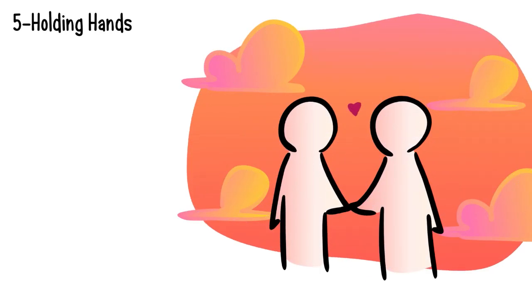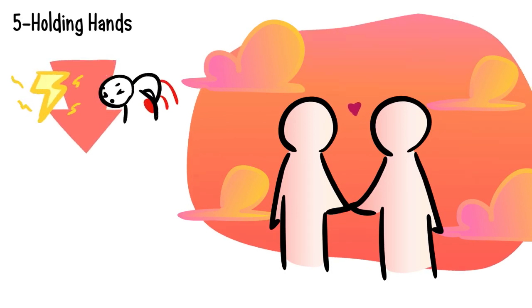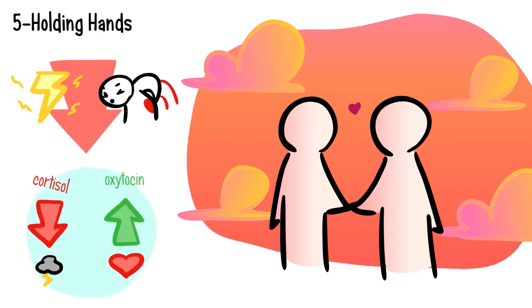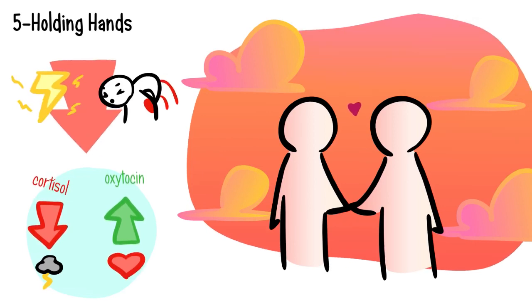Fact number 5. Holding hands. Do you fancy holding hands with a loved one? Well, I have good news for you. Holding hands with someone you truly care about can alleviate stress and physical pain. This is beneficial because it decreases cortisol levels and increases oxytocin. Cortisol is a stress hormone and oxytocin is a love hormone. Therefore, you end up feeling better after holding hands.